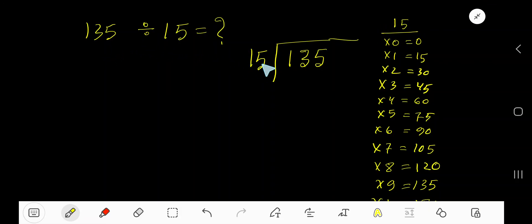135 divided by 15 here. 15 is a divisor, so we need multiplication table of 15.